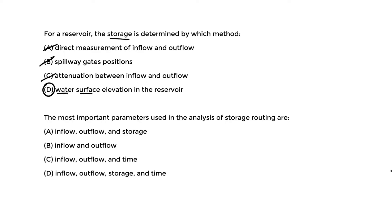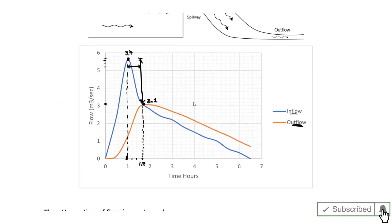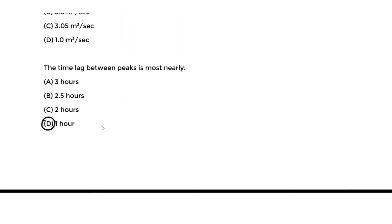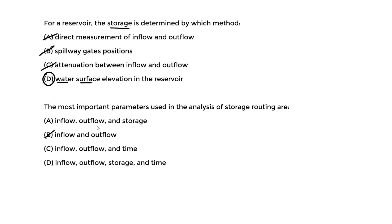The next question asks: what is the most important parameter used in storage routing analysis? The options include various combinations of inflow, outflow, storage, and time. From the continuity equation — change in storage with respect to time equals inflow minus outflow — all four parameters are present. Therefore the answer is D: inflow, outflow, storage, and time.